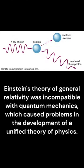Einstein's theory of general relativity was incompatible with quantum mechanics, which caused problems in the development of a unified theory of physics.